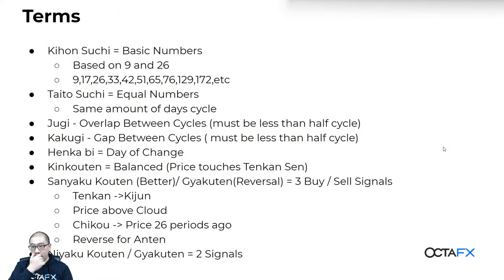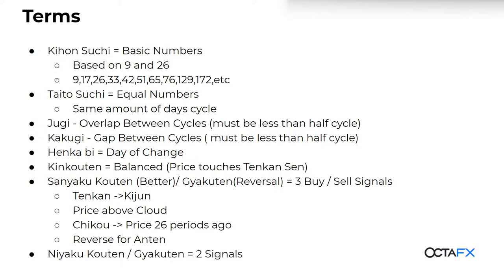Here are the key terms. First: Kihon Suci — this is the basic number, the foundation. The numbers used, based on 9 and 26, are: 9, 17, 26, 33, 42, 51, 65, 76, 129, 172. These are valid up to 172; after 200 the opinions on calculation start to differ. The pattern is similar to Fibonacci — calculated by multiplication and subtraction based on 26. Second: Taito Suci — these are equal numbers. If the market moved up for 8 days, the expectation is approximately 8 days down. People often misinterpret this.